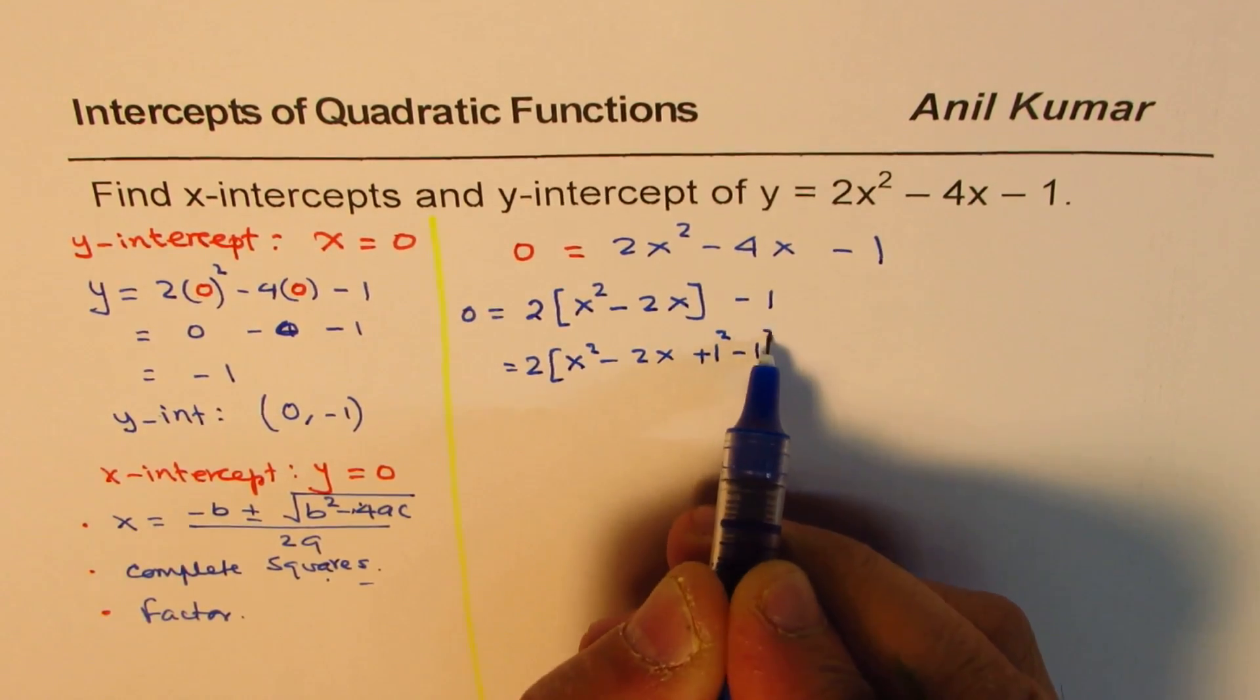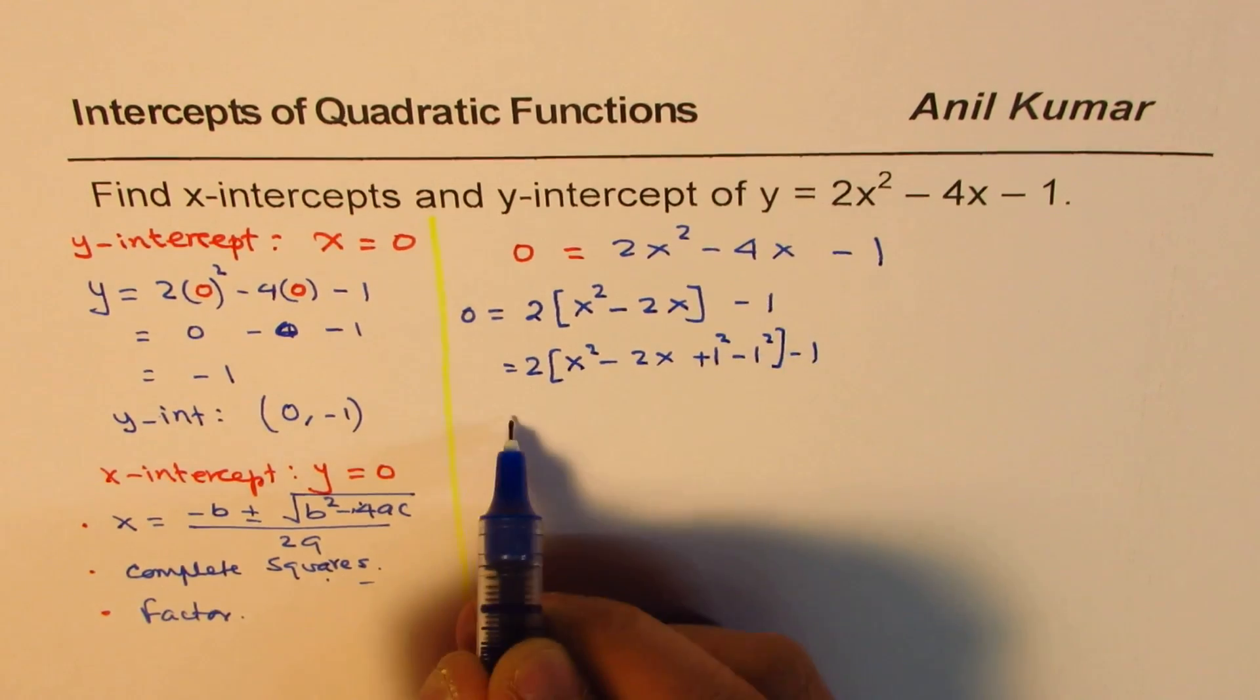So we have half of 2 is 1. So we'll do 1 squared minus 1 squared. So add and subtract that 1 squared.